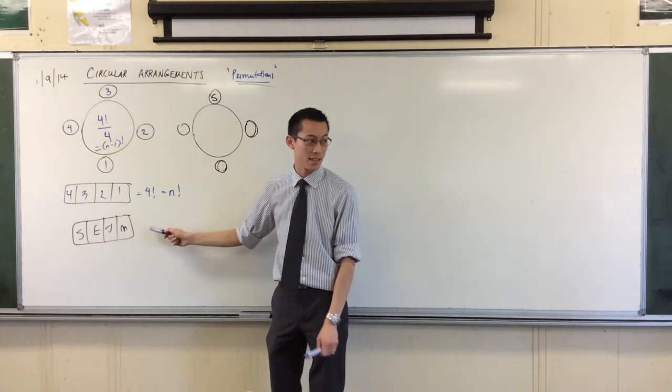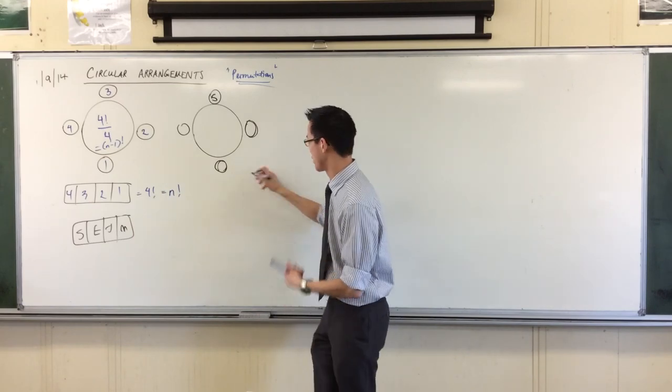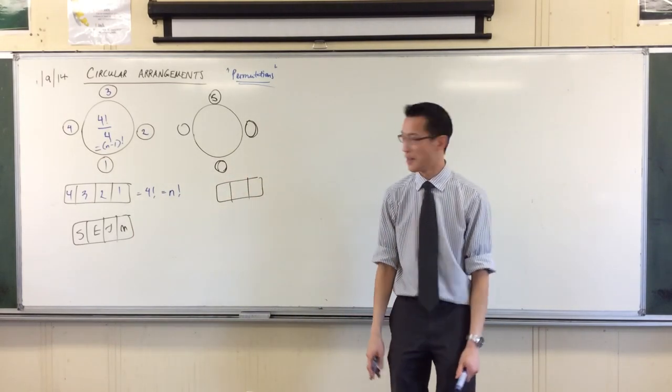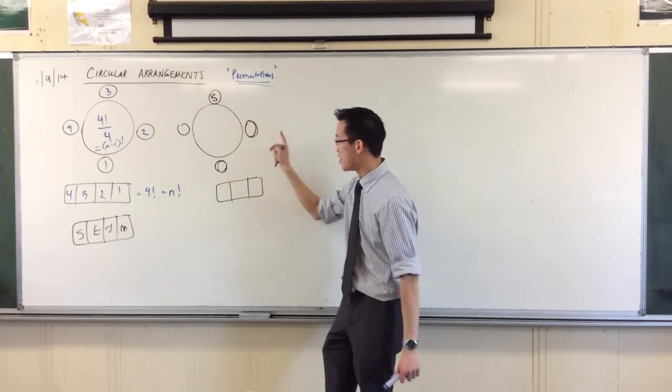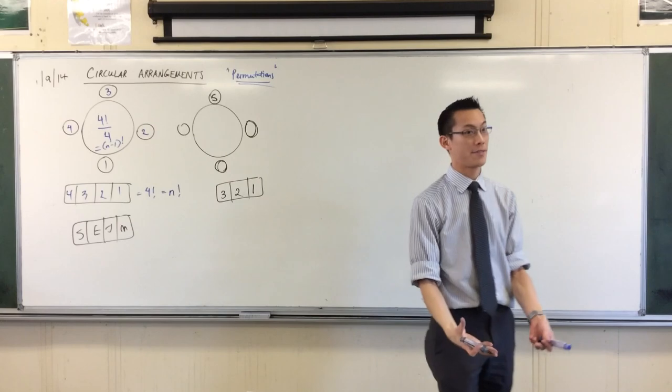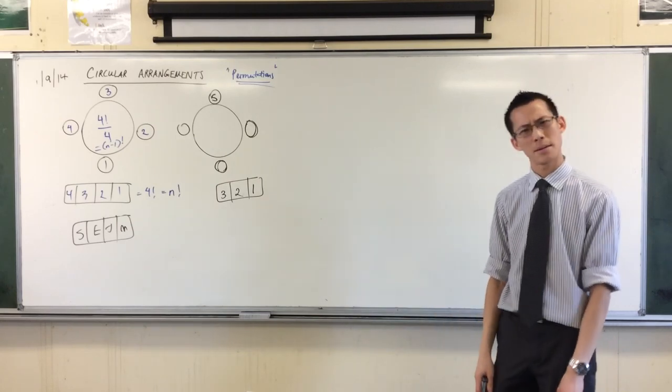This is a line like this. It's just that there's only three spots. There's your (n-1). So your first person, you just lock him in, and then there are three, two, one ways to arrange what's left - three factorial. Does that make sense?